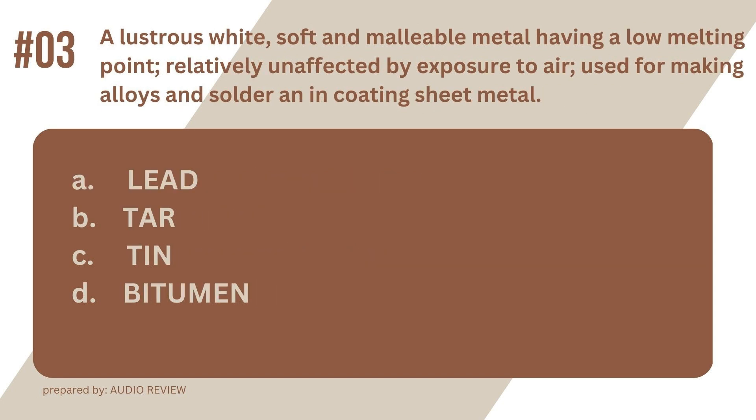Question 3. A lustrous white, soft, and malleable metal having a low melting point, relatively unaffected by exposure to air, used for making alloys and solder and encoding sheet metal. A. Lead. B. Tar. C. Tin. D. Bitumen. The answer? It's C. Tin. A lustrous white, soft, and malleable metal having a low melting point, relatively unaffected by exposure to air, used for making alloys and solder and encoding sheet metal. Tin.